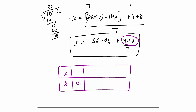Now what will be the value of x if y is 3? If y is 3, then 4 plus y becomes 7, and 7 by 7 is 1. And 26 minus 2 times 3 equals 26 minus 6, which is 20 plus 1 equals 21. So x is 21 and y is 3 — that is my first solution. Now I will make a pattern.